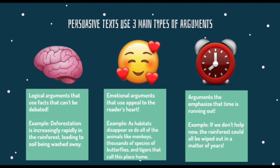And I'm going to use some emojis here to help us picture what those look like. The first type of argument is a logical argument that uses facts that can't be debated. So using my research from yesterday, I might say something like, deforestation is increasingly rapid in the rainforest, leading to the soil being washed away. We know scientifically that that is happening.